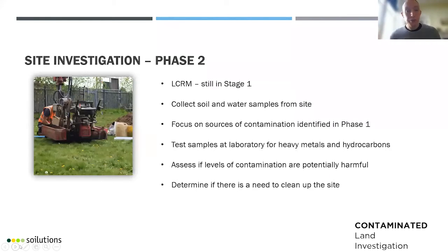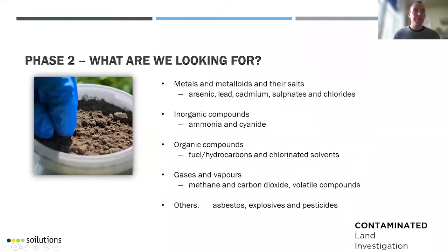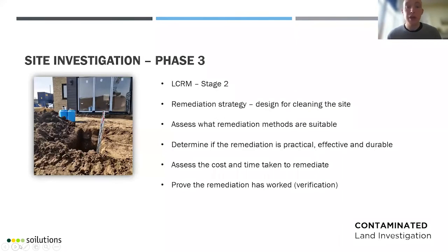The next stage is the Phase 2, which is the on-site investigation or ground investigation. A consultant will visit the site, collect soil and groundwater samples, and properly monitor ground gases. Those soil and water samples will be analysed in the laboratory for heavy metals, hydrocarbons and potentially other contaminants like pesticides. Once results come back, they are compared to government-published safe levels. If there is a risk of harm, the Phase 2 will state that remediation is required to remove the risk to receptors.